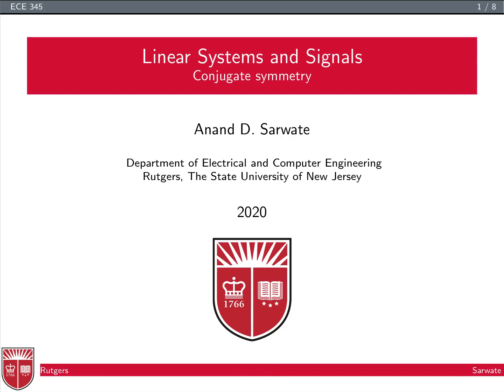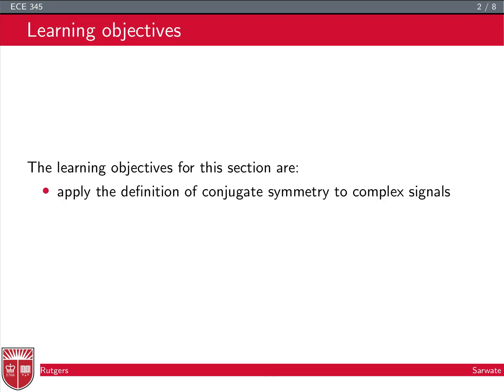The other type of symmetry we look at in this class is for complex signals, called conjugate symmetry. As the name implies, it involves taking the complex conjugate of the signal. The learning objectives are to understand its definition and be able to apply it to complex signals.